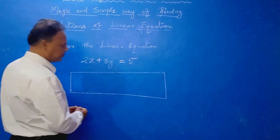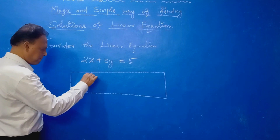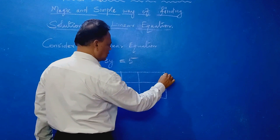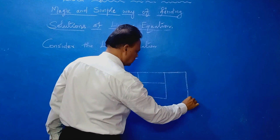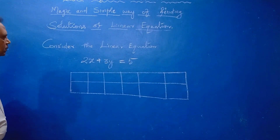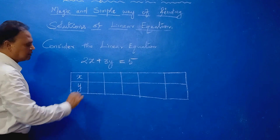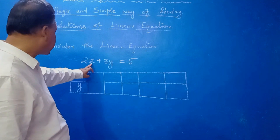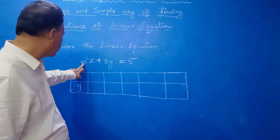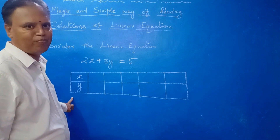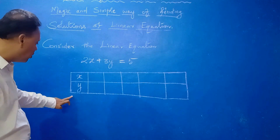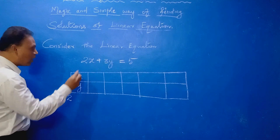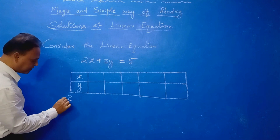Consider the linear equation 2x plus 3y equal to 5. You know that a linear equation has infinitely many solutions. You write x and y. Now, the x-coefficient is 2. This 2, you are going to write below y. While writing below y, you have to take the opposite sign — that is the rule. Plus 2 means minus 2.